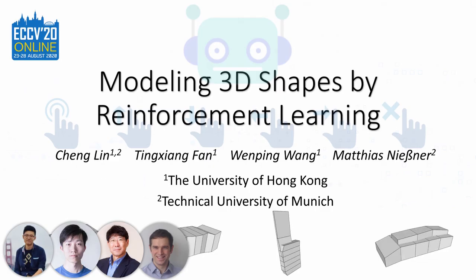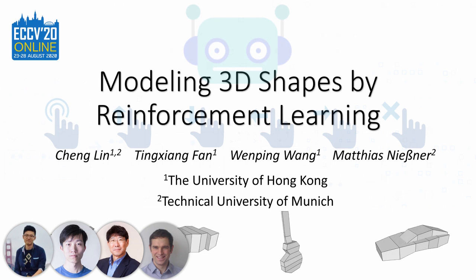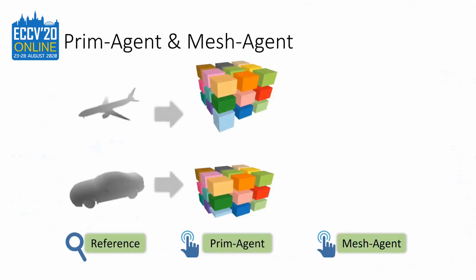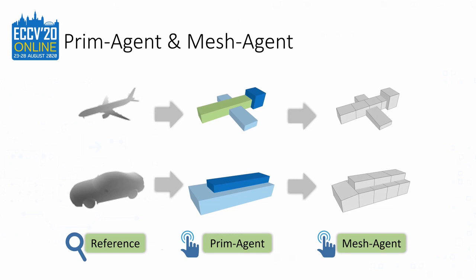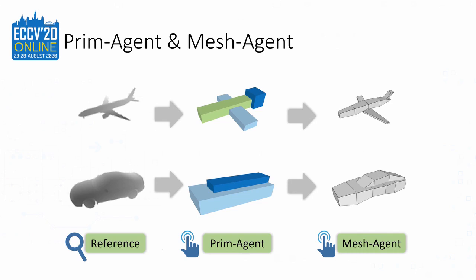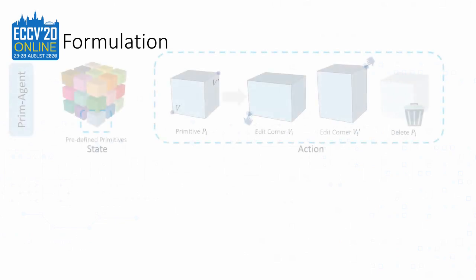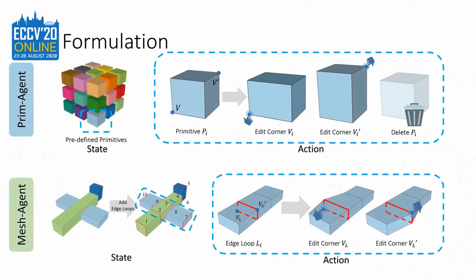We explore how to enable machines to model 3D shapes like human modelers using reinforcement learning. Inspired by artist-based modeling, we propose a two-step neural framework named PrimoGen and MeshOgen based on reinforcement learning to model 3D shapes. The modeling agents interact with the environment by executing actions and collecting rewards to learn 3D modeling policies. Given a shape reference, PrimoGen will operate a set of predefined primitives to approximate the target shape, while the mesh agent learns to edit meshes based on edge loops to create detailed geometry.